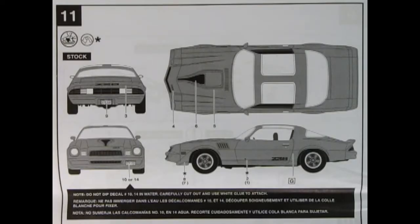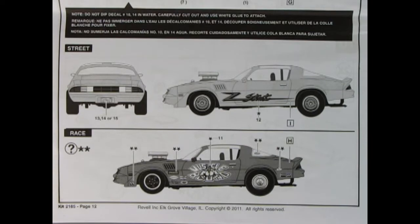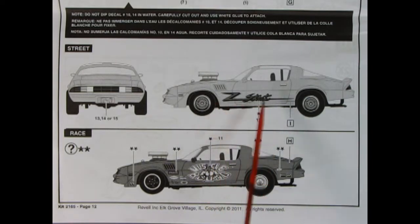Panel 11 shows us the decal locations for our factory stock version of the Camaro. There's all the different stripes and the Z28 logo going on and making the car look wonderful. Down below we have the decal location for our street and race version. Here we have the Z street decal which goes on the side, and for our race car we've got factory sponsors as well as muscle bound for the doors.